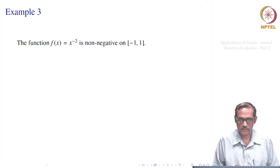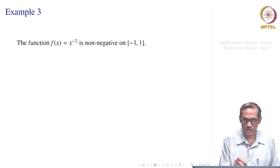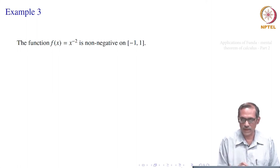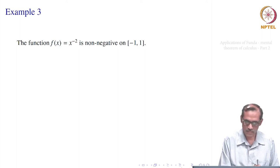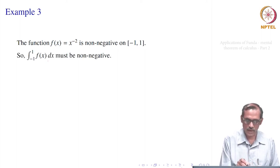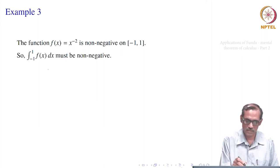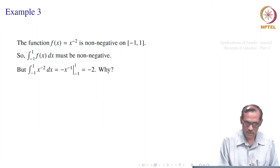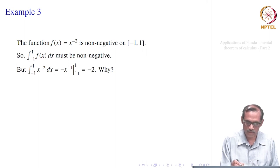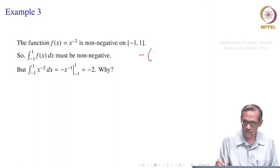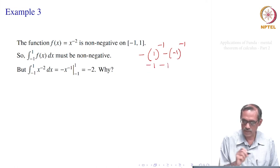In the next example, something else is asked. The function f(x) = x⁻² is non-negative on [-1, 1], so we might expect the integral from -1 to 1 of f(x) dx to be non-negative. But if we compute: -x⁻¹ evaluated at 1 and -1 gives -1 - (-(-1)) = -1 - 1 = -2. Why is this happening — we expected a non-negative result but got -2?